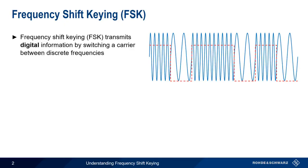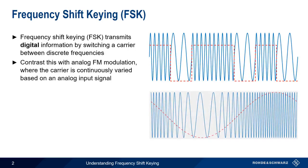Frequency shift keying is used to transmit digital information, that is, ones and zeros, by switching a carrier between discrete frequencies. Contrast this with analog frequency modulation, in which the carrier frequency is varied continuously depending on an analog modulating signal.